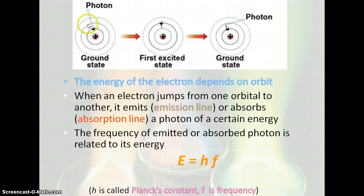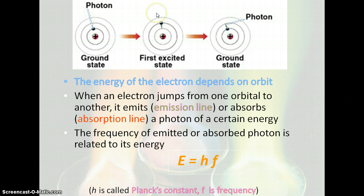When it absorbs this light to move up, that is what we call an absorption spectra — there would be certain parts of the visible spectrum missing. And then it emits that same energy of light, and that's where we get our emission spectra.